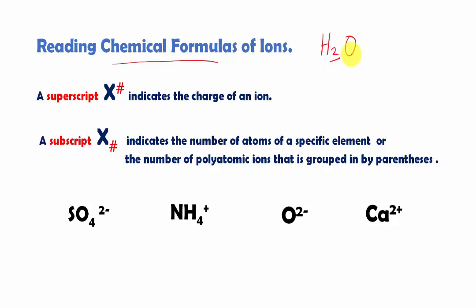Now, in the chemical formulas of ions, there are two common numbers that you need to understand. The first one is called a superscript.